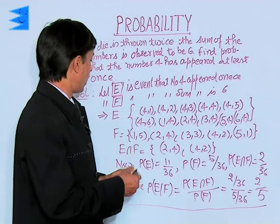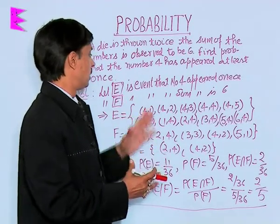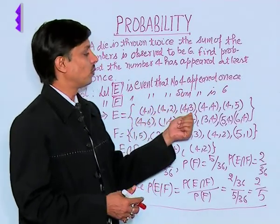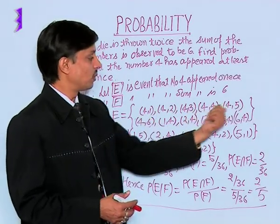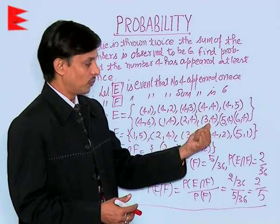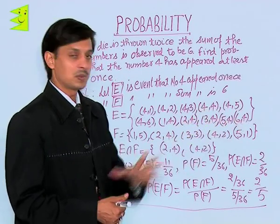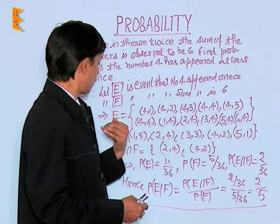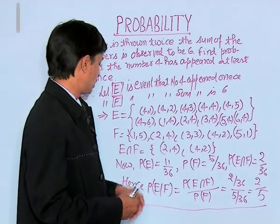E is the event where 4 appears at least once. That means (4,1), (4,2), (4,3), (4,4), (4,5), (4,6), or it can be (1,4), (2,4), (3,4). We already have (4,4), and also (5,4) and (6,4). These are the possible elementary outcomes for event E, where 4 appears at least once.